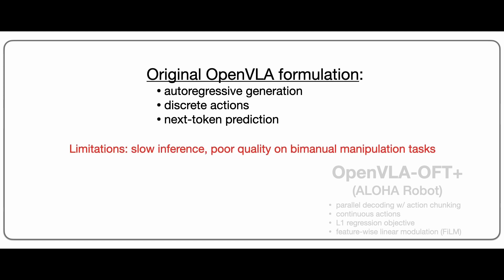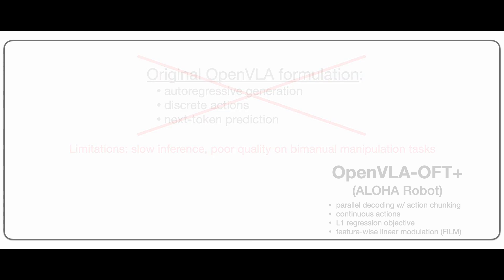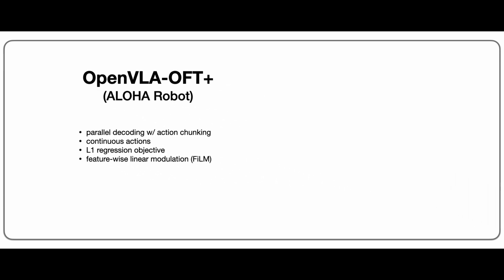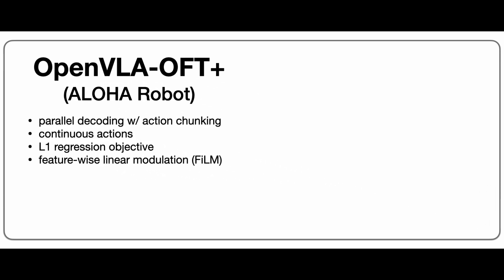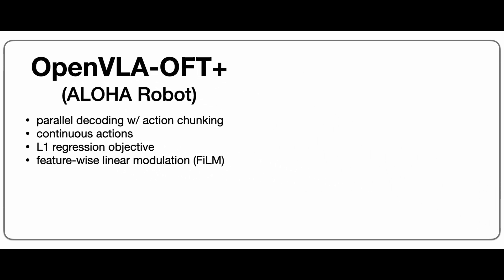While OpenVLA can be fine-tuned to new tasks with this formulation, some major limitations include slow inference speed and low-quality predictions for bimanual robotic manipulation tasks. Our new fine-tuning recipe addresses these challenges with a few key design components.